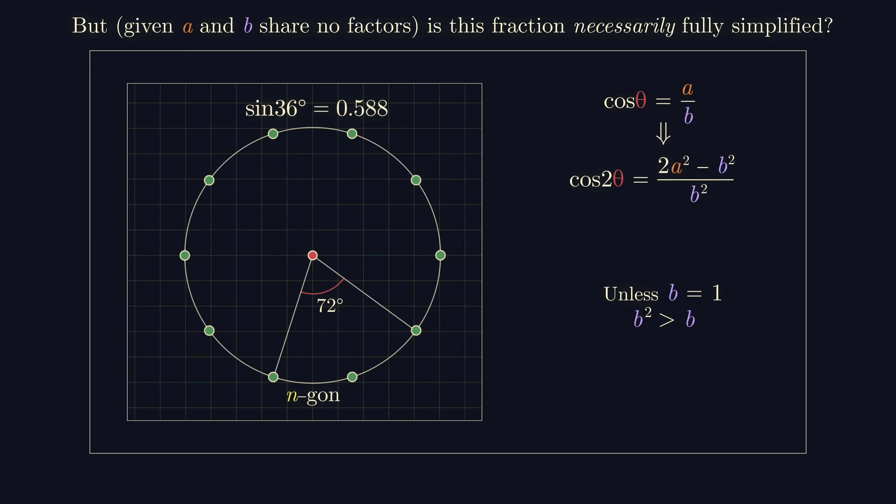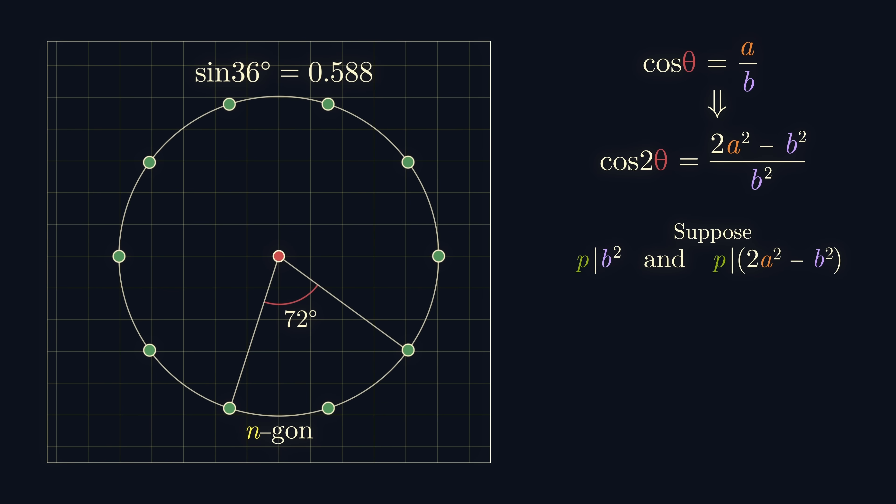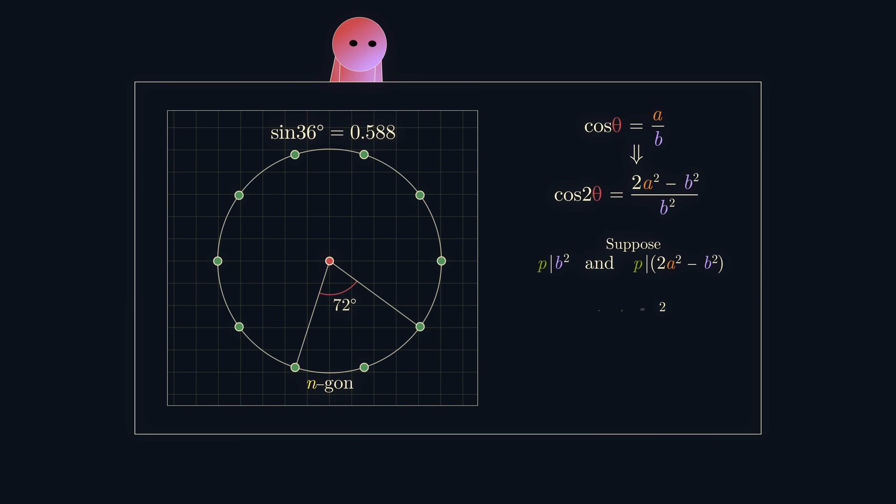Suppose there's a prime p, which divides both the denominator and the numerator. If p divides b squared, then p must divide b. And if p divides 2a squared minus b squared, then p must divide 2a squared. If p was odd, then p would have to divide a, which would contradict a and b sharing no factors. So, the only possibility is that p is even, or in other words, p equals 2. Whilst this argument is starting to get quite finicky, what we've just showed is that the highest common factor between the numerator and the denominator is 2.